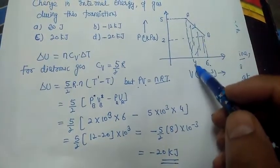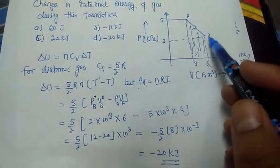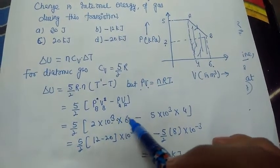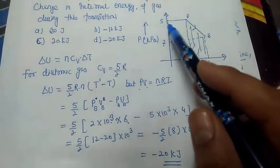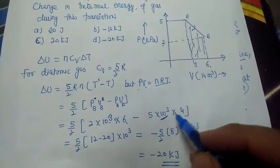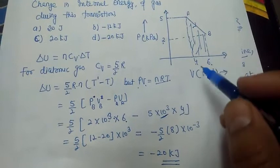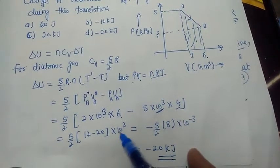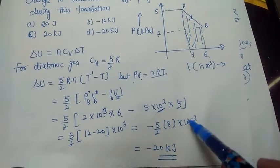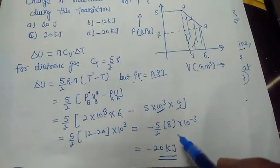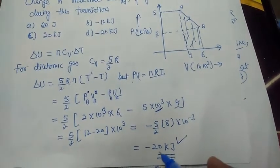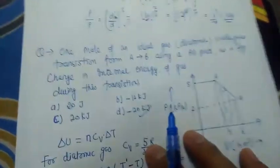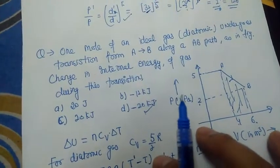At point B: pressure = 2 kPa, volume = 6 m³, so PV = 12. At point A: pressure = 5 kPa, volume = 4 m³, so PV = 20. Therefore ΔU = (5/2) × (12 - 20) × 10³ = (5/2) × (-8000) = -20 kJ. The correct answer is -20 kJ.